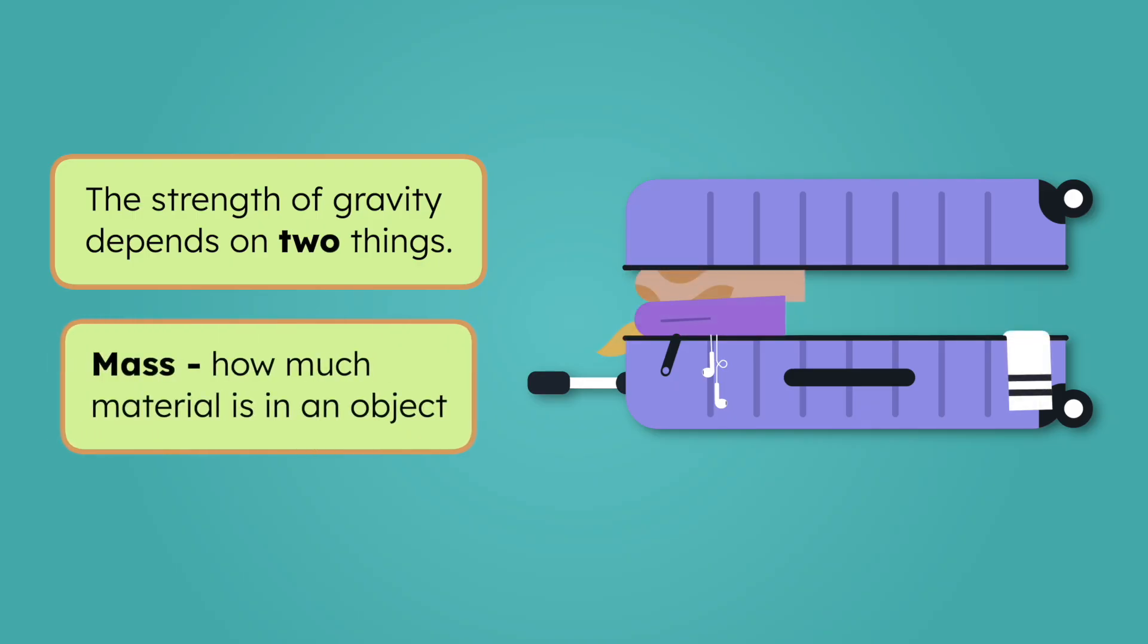The strength of gravity depends on two things. The first is mass. Mass tells us how much material is packed into an object. It's like how full your suitcase is when you pack. More stuff inside means more mass. The more mass something has, the stronger its gravity. The sun is very large and has a ton of mass. That's why it has such strong gravity and why it can keep all the planets orbiting around it.